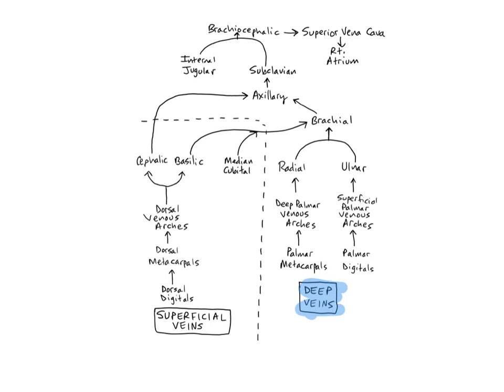The deep veins are found closer to bone and muscle and are often located near arteries having the same name. Let's begin our tour with the deep veins. The palmar metacarpals drain blood from the palms of the hand into the deep palmar venous arches, which empty into the radial veins. The radials unite with the ulnar veins to form the brachial veins just inferior to the elbow joint. The radials drain the muscles and bones of the lateral hands and forearms and are found running next to the radial arteries.